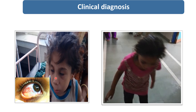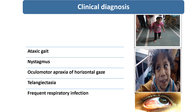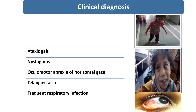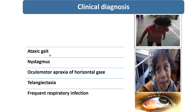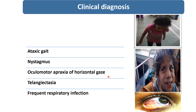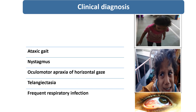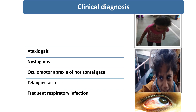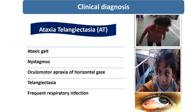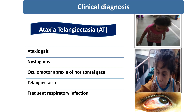On the basis of nystagmus, skewed deviation of the eyes, oculomotor apraxia of horizontal gaze, telangiectasia, ataxic gait, and frequent infection, the clinical diagnosis is ataxia telangiectasia.